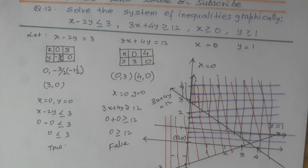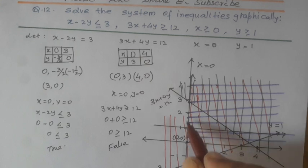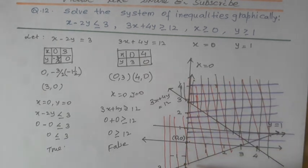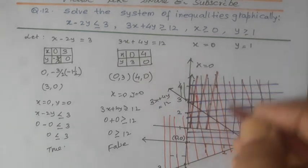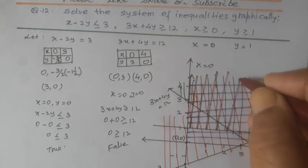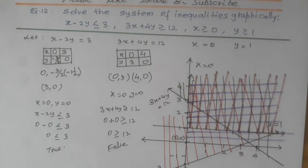And y is greater than 1. This is 1, 2, 3, 4, like this. This side will be the smaller side, so it will be in the upper direction. So, this will be like this.